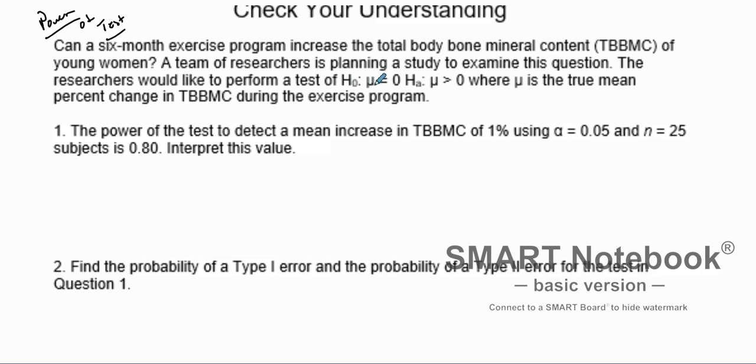So they have the alternatives where the mean equals zero. They're saying that there is no difference. And then they have the alternative where the mean is going to be greater than zero, where mu is the true mean percent change in TBBMC during the exercise program. So they give us a parameter and our hypothesis test.